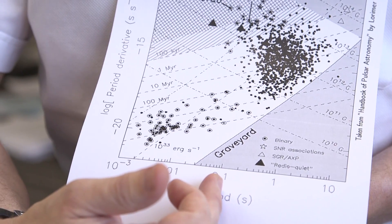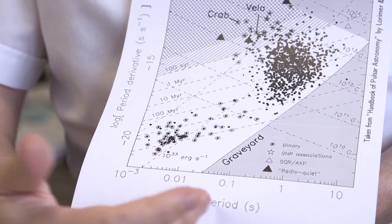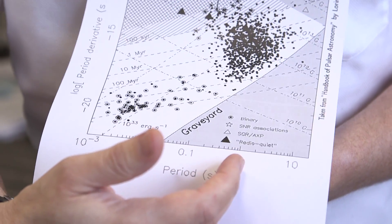So the shortest periods of pulsars is about a millisecond. Normal ones, rotation rates may be 10 times a second. And then the slow ones rotate for a second or two.